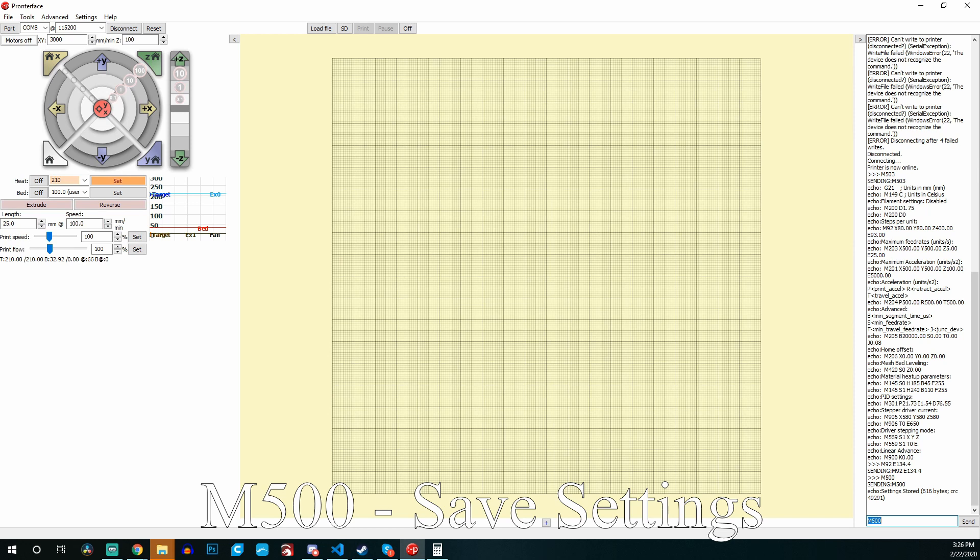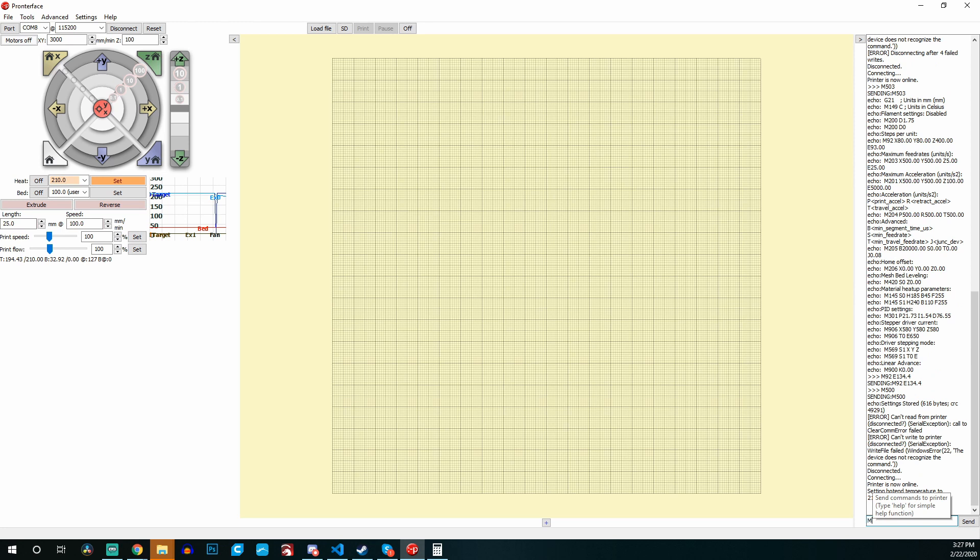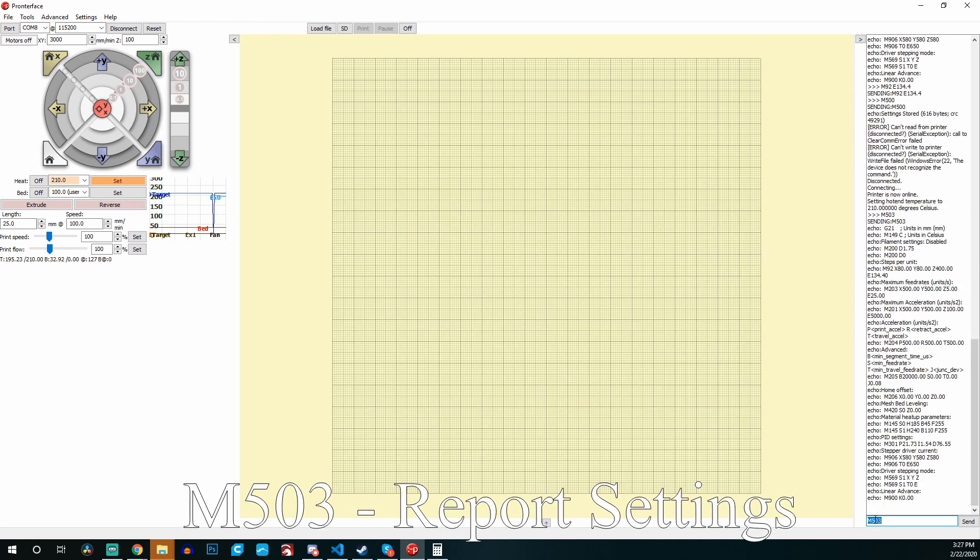Once done with that, I rebooted my printer, sent over the M503 command, and double-checked to make sure it had actually updated. As you can see, it's now showing E134.4 and I know I'm good to go.